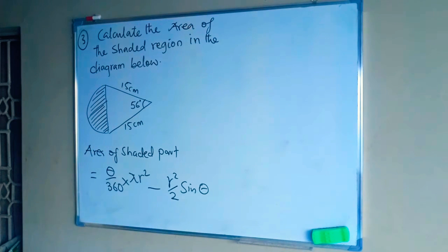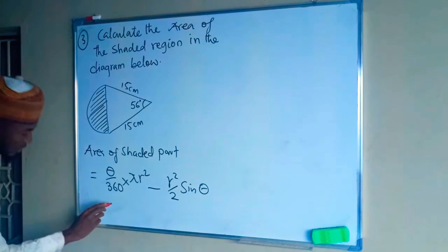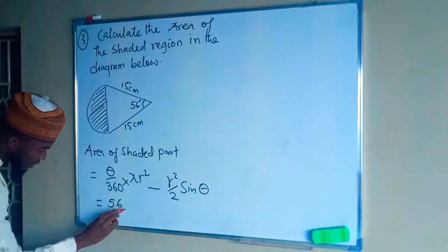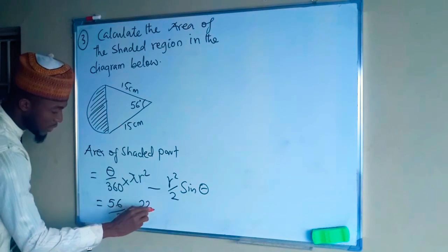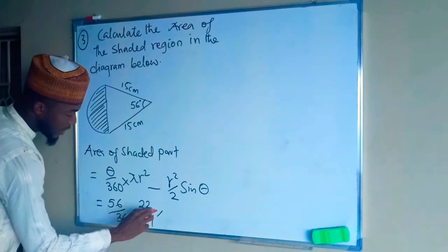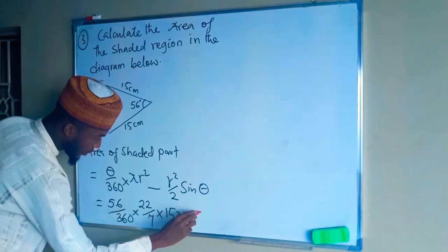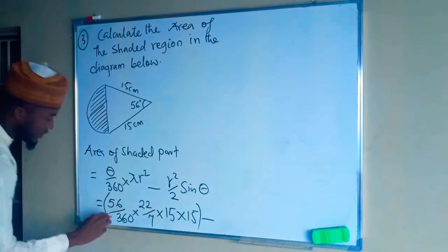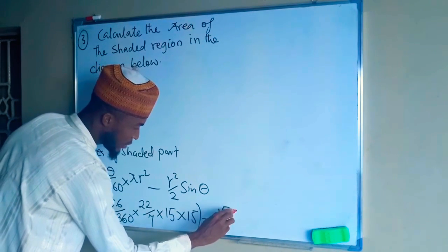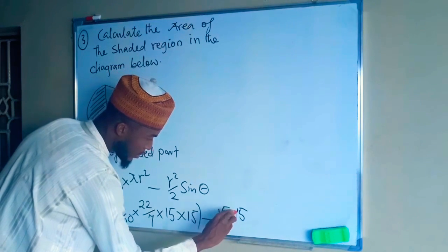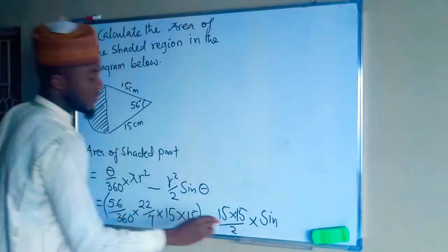Substituting values: θ = 56° and r = 15. The sector area is (56/360) × (22/7) × 15 × 15. Then we subtract the triangle area: (15 × 15)/2 × sin 56°.